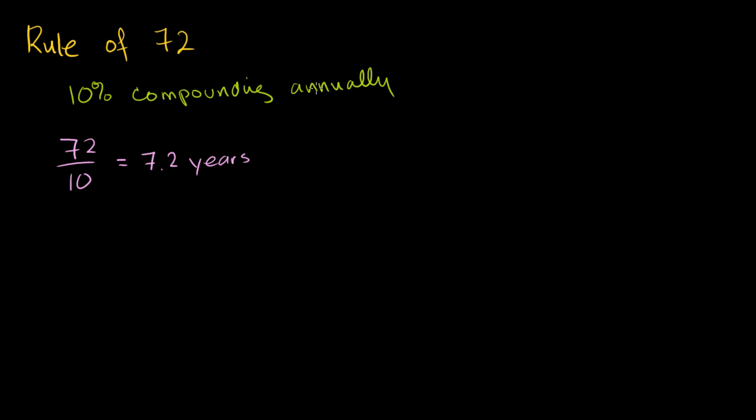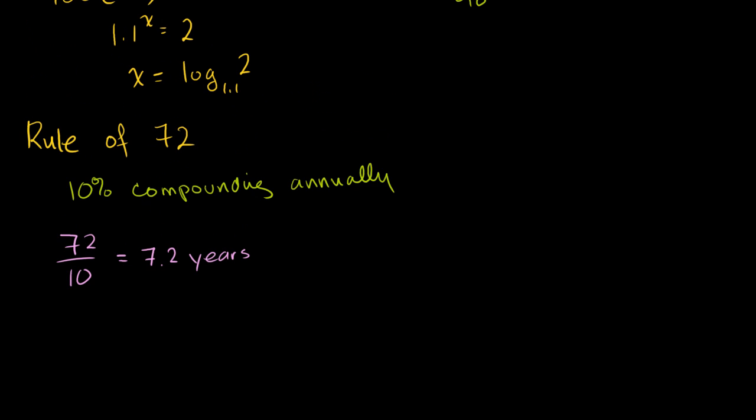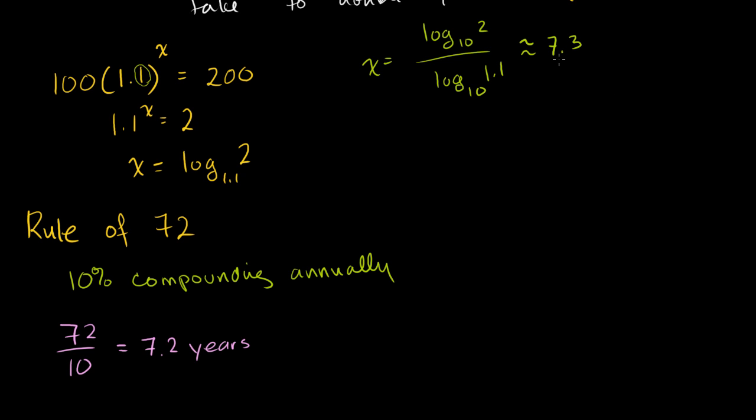If this was 10% compounding monthly, it would be 7.2 months. So I got 7.2 years, which is pretty darn close to what we got by doing all of that fancy math.